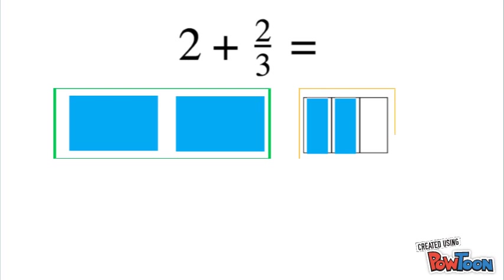So visually we see that we have two wholes and 2/3, so our answer is pretty simple. It's a mixed number, 2 and 2/3. So you can see that when we're adding a whole number and a fraction, we're just putting them together as our answer.